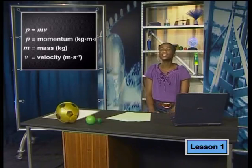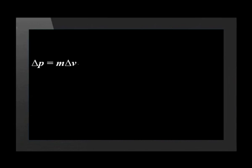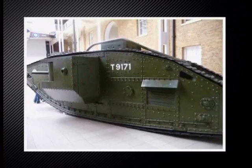To calculate the change in momentum of an object, we can use the equation: change in momentum is equal to mass times change in velocity. Change in momentum equals mass times final velocity minus initial velocity.